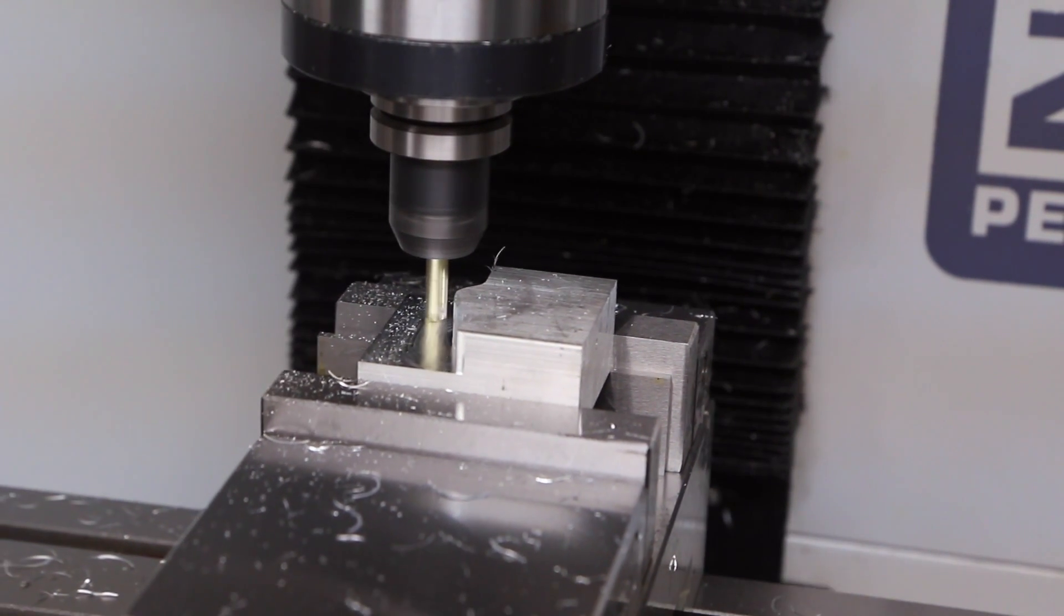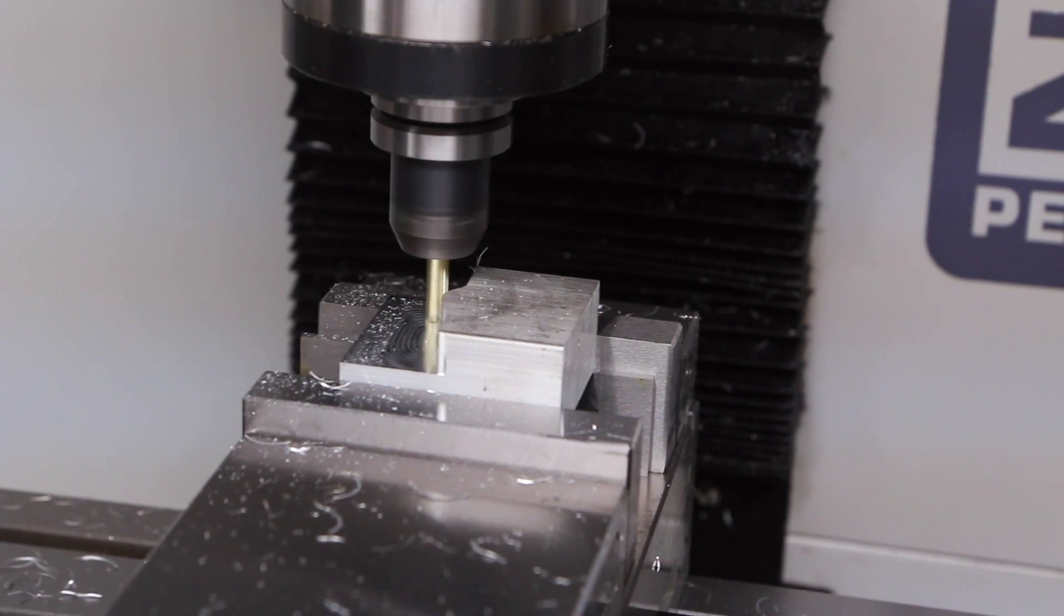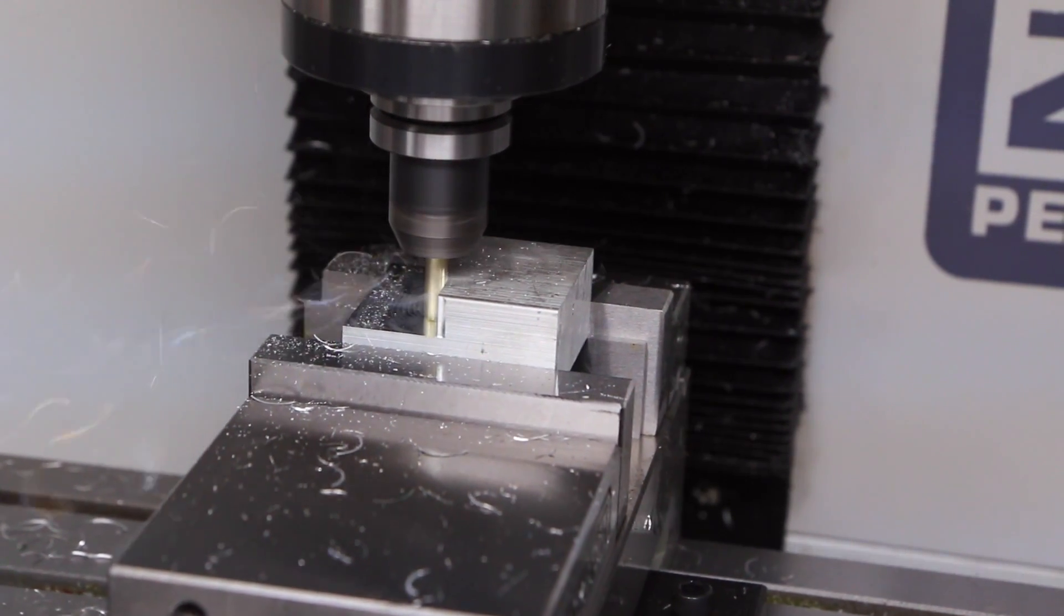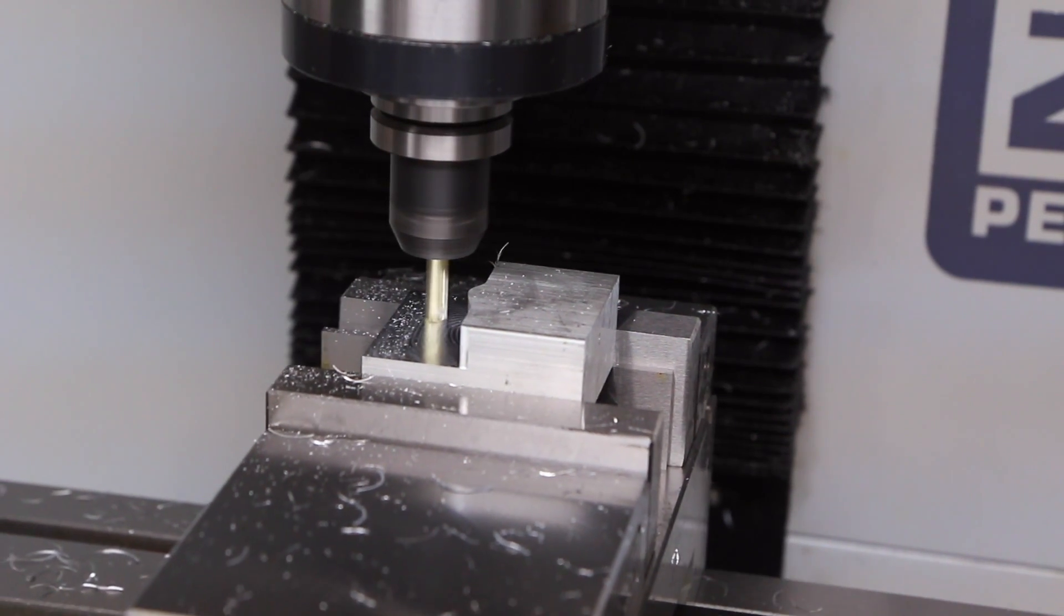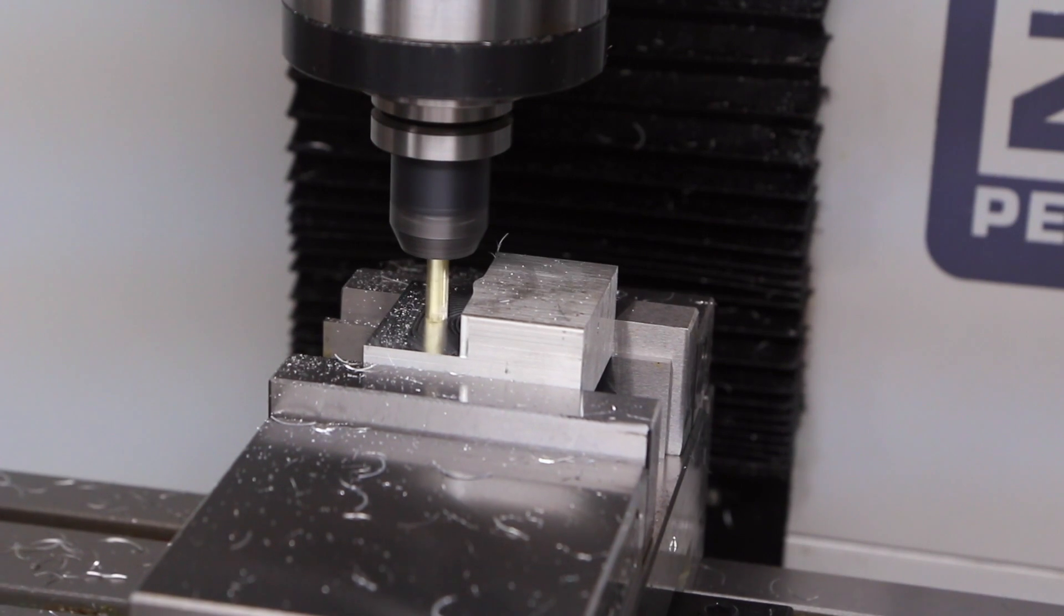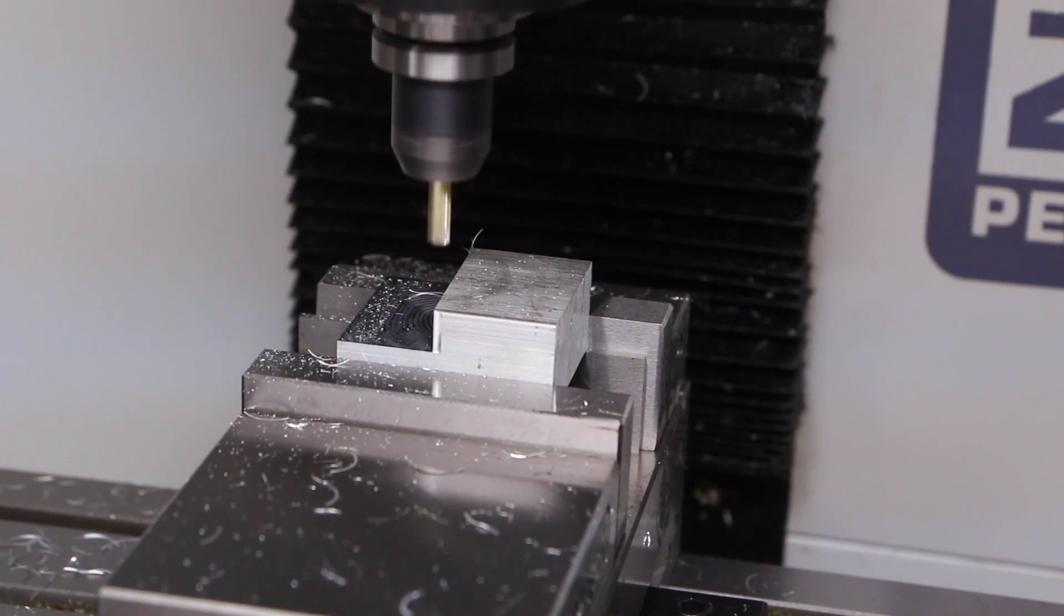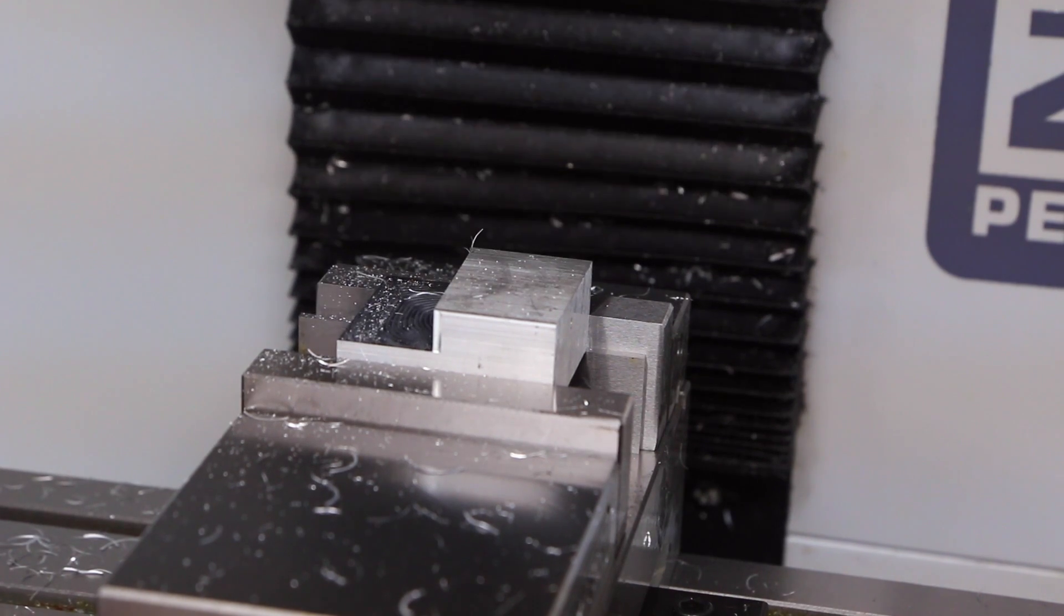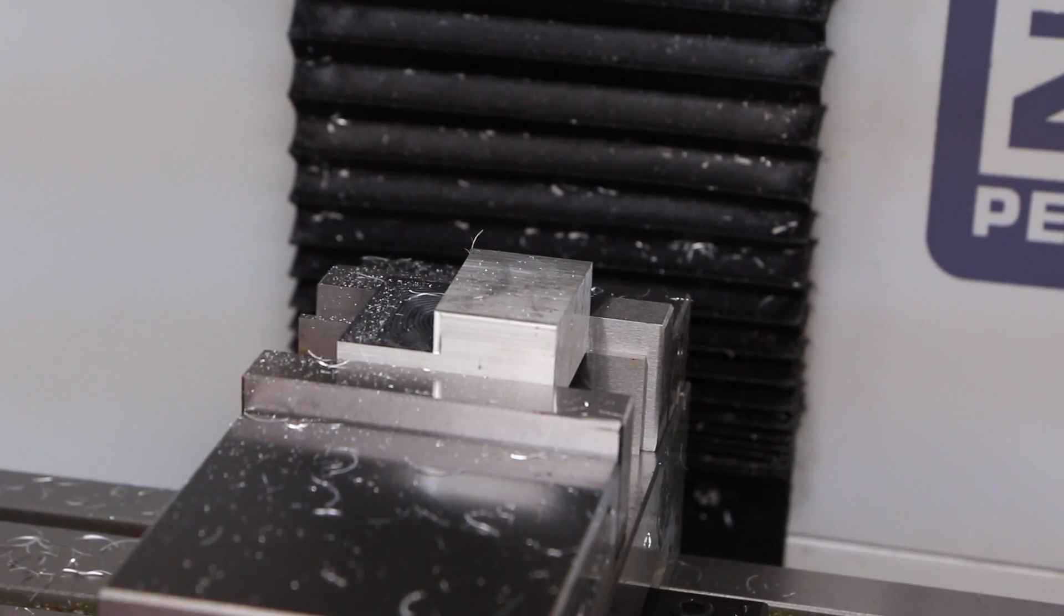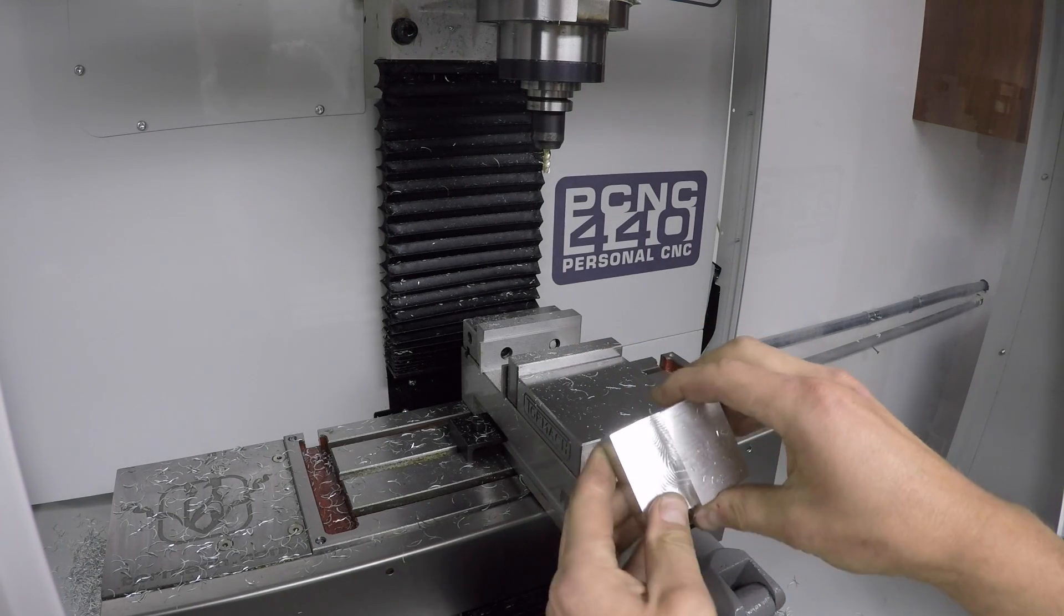Shout out to Lakeshore Carbide too - this is tool 31 for us, which is a quarter inch three flute end mill dedicated for aluminum with the ZRN coating. Works great! Holy cow, done!